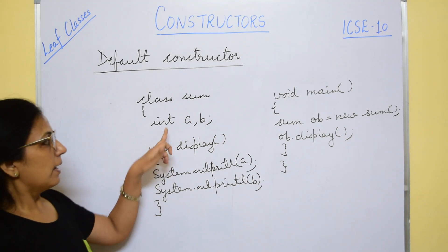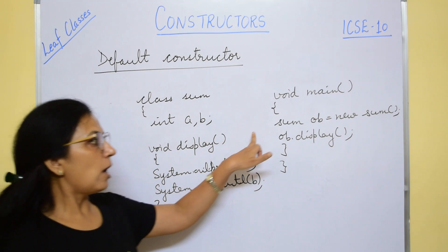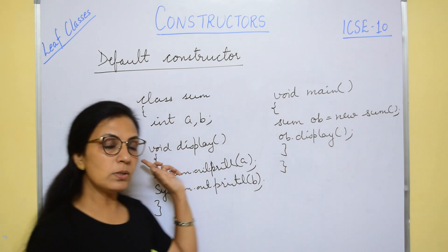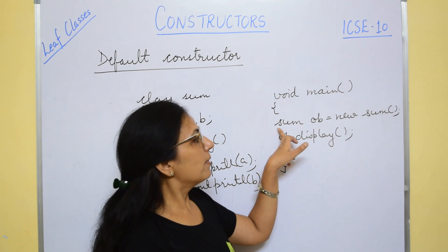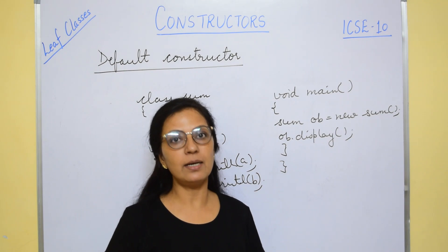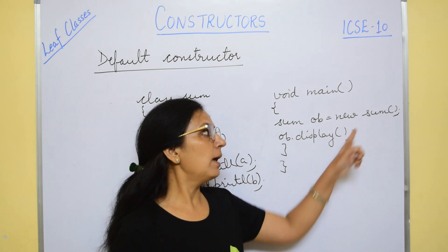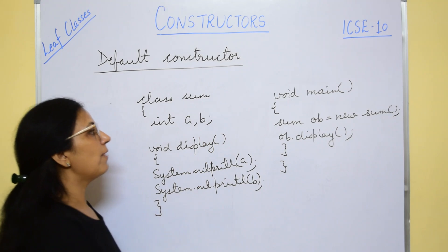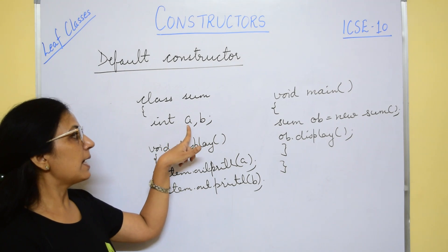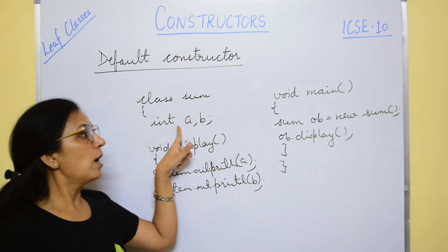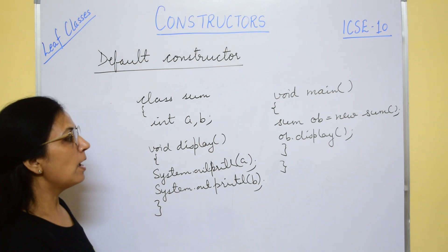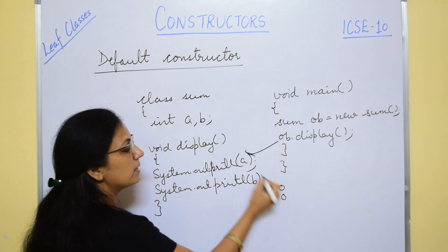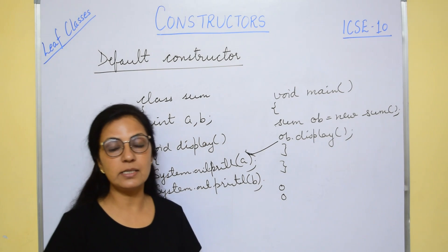In this case, when sum ob = new sum() is written, there is no sum constructor defined. But we know that at the time of object creation, the constructor is called. When no constructor is defined, the default constructor works — it initializes the data members with default values according to their data types. For int, the default value is 0. So a and b are both initialized to 0, and when the display function is called, it will print 0 and 0.